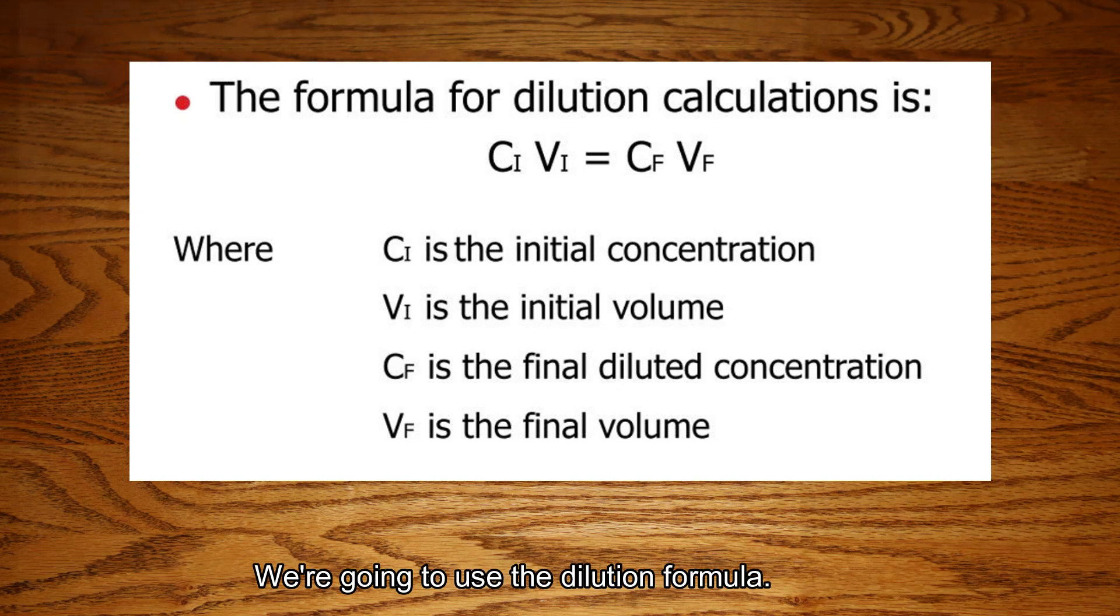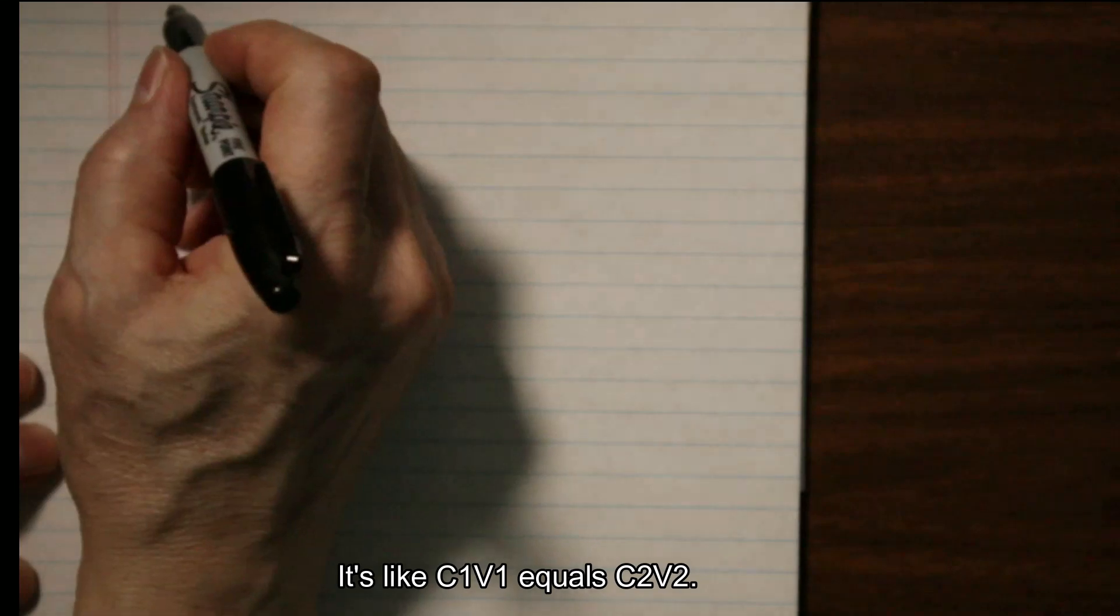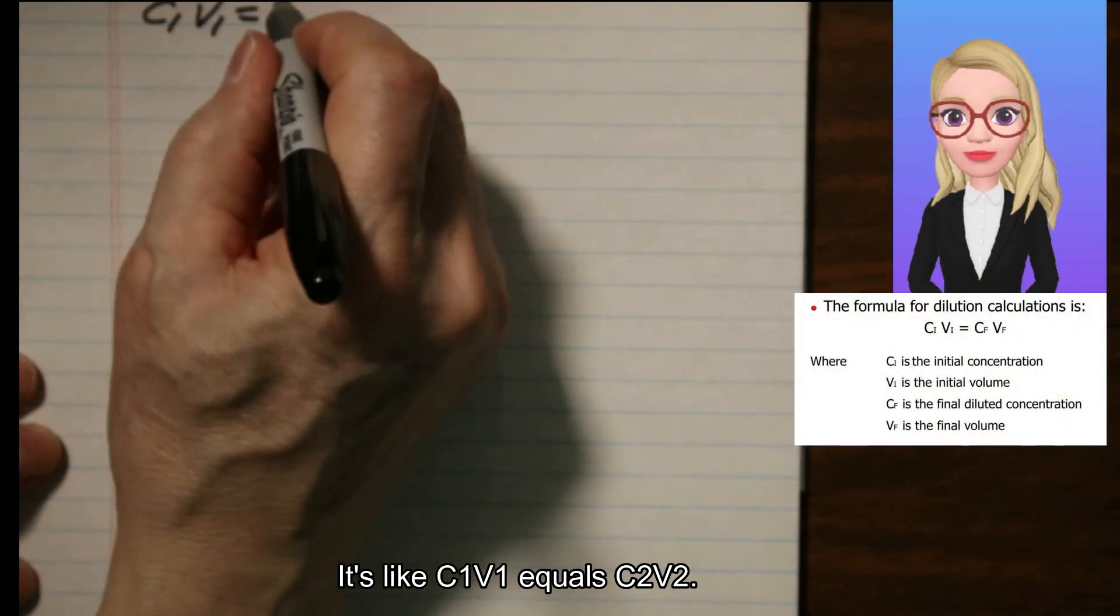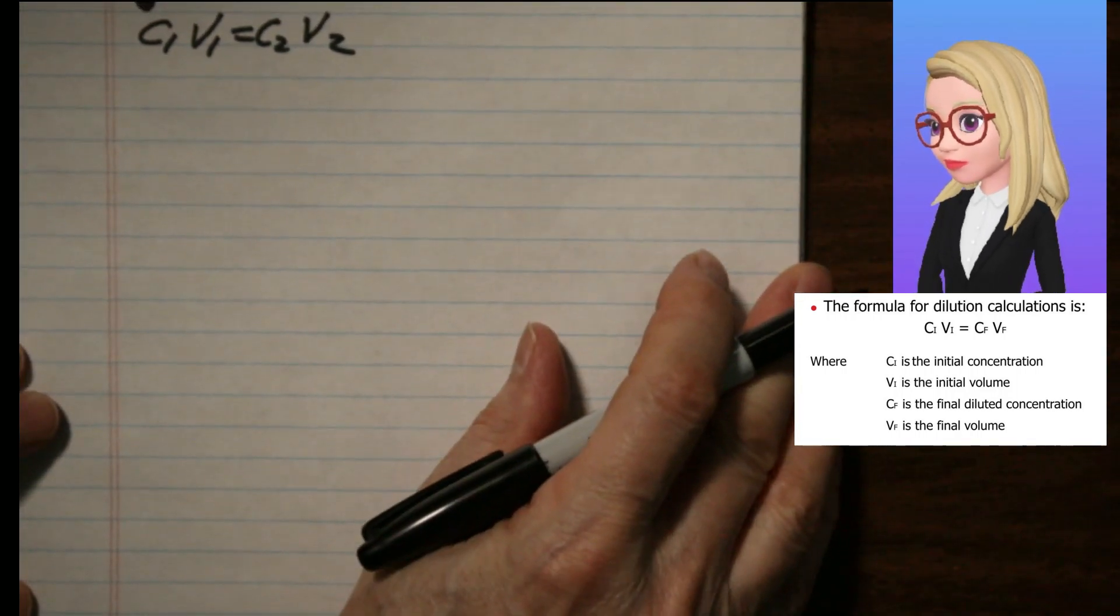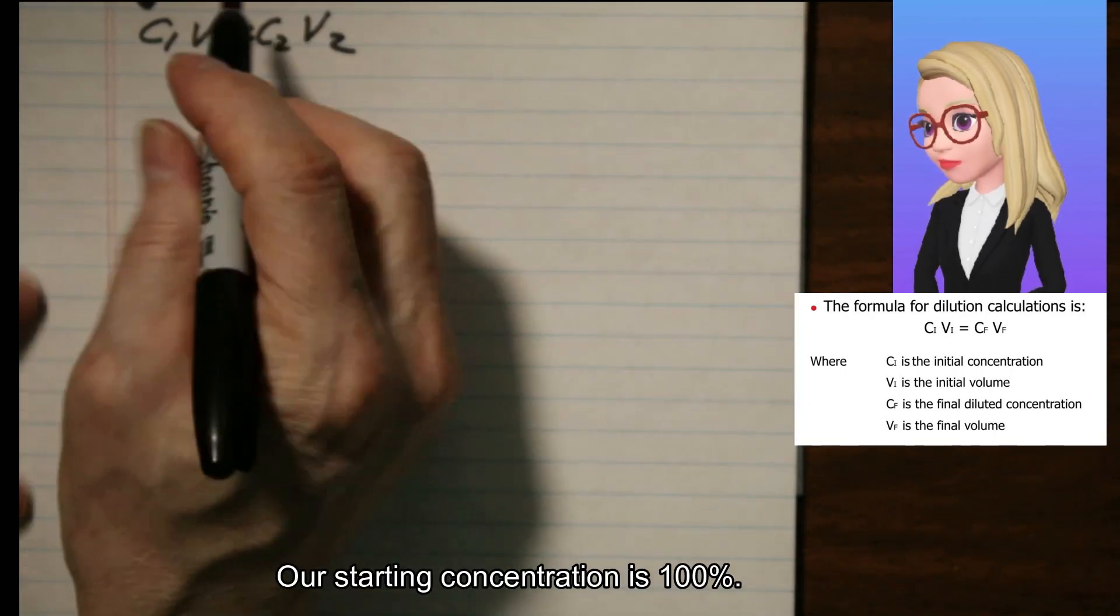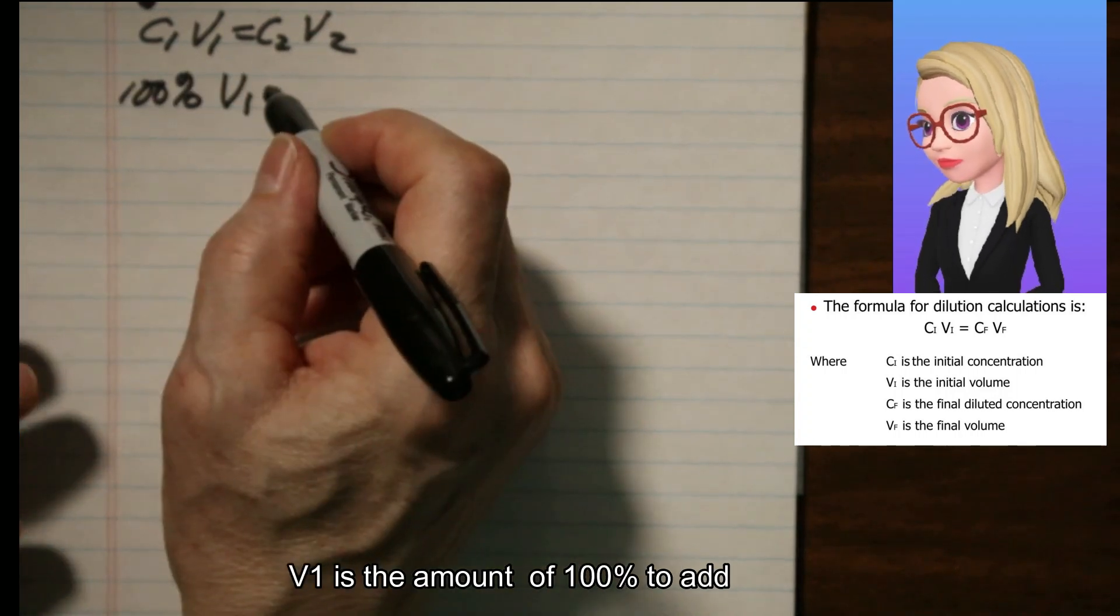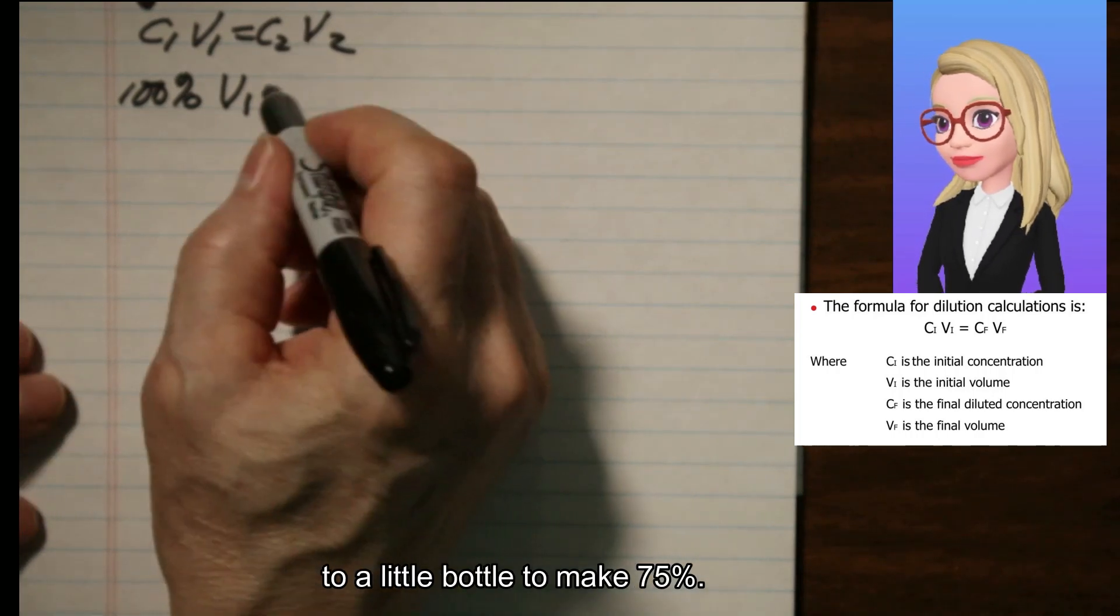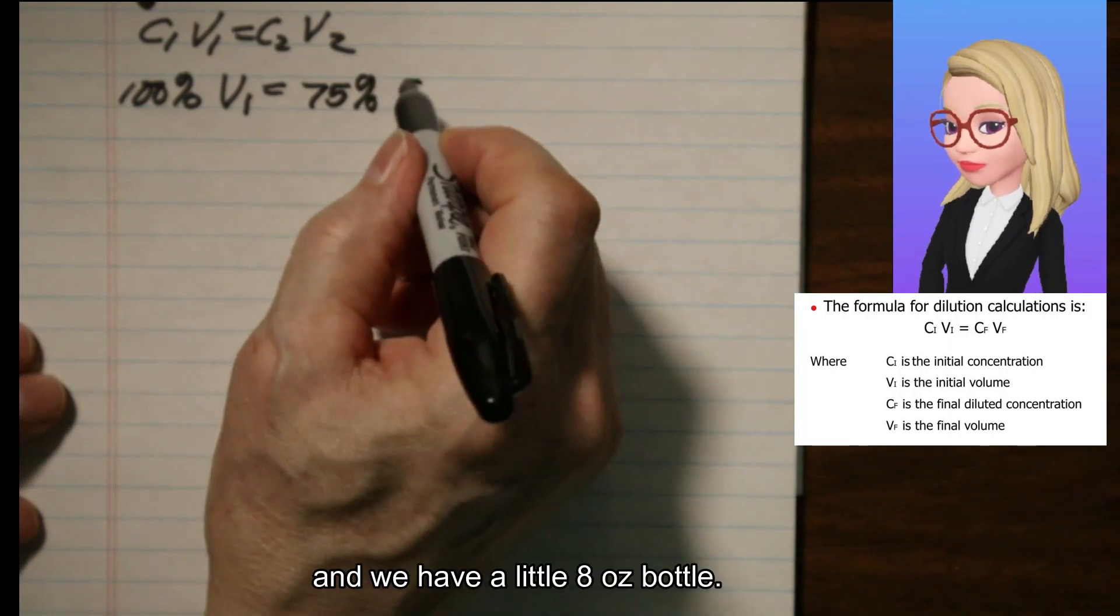How are we going to do this? We're going to use a dilution formula. It's C1V1 equals C2V2. And we plug in the values we know. Our starting concentration is 100%. V1 is the amount of 100% to add to a little bottle to make 75%. So we want 75% and we have a little 8 ounce bottle.